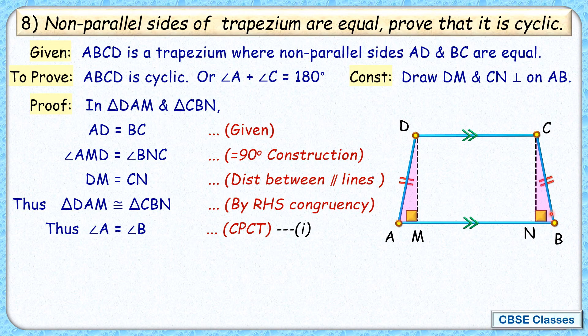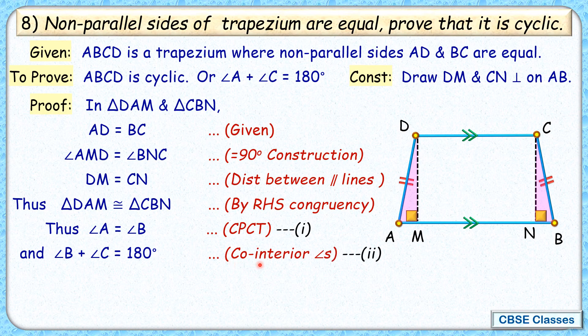As these angles are equal, now we have one more observation. As these lines are parallel, CD and AB are parallel, and CB is transversal. So we can say that angle B plus angle C equals 180 degrees. Why? Because they are co-interior angles.